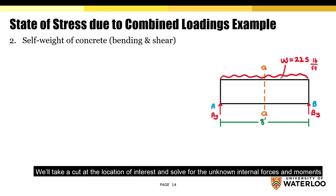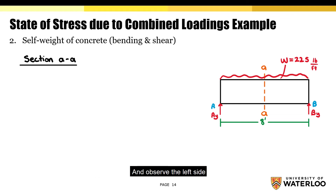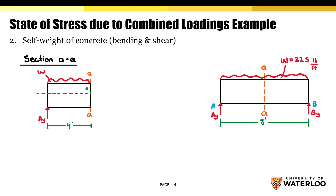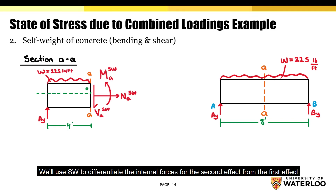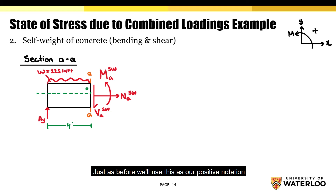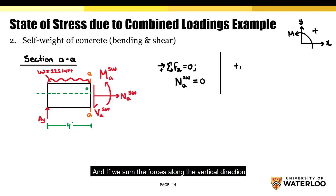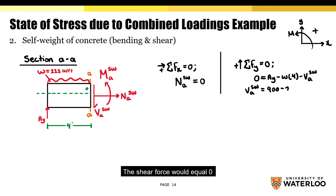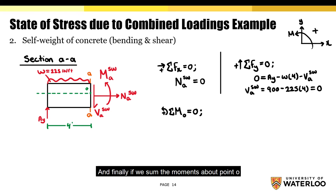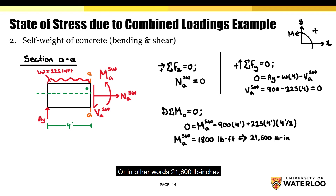On this slide we'll take a cut at the location of interest and solve for the unknown internal forces and moments, then use those values to determine the normal stresses on the cross-section. Taking a cut at the mid-span and observing the left side, we use SW to differentiate the internal forces for the second effect from the first. Summing horizontal forces: axial force equals zero. Summing vertical forces: shear force equals zero. Summing moments about point O: the moment at the cut equals 1800 pound-feet, or 21,600 pound-inches.